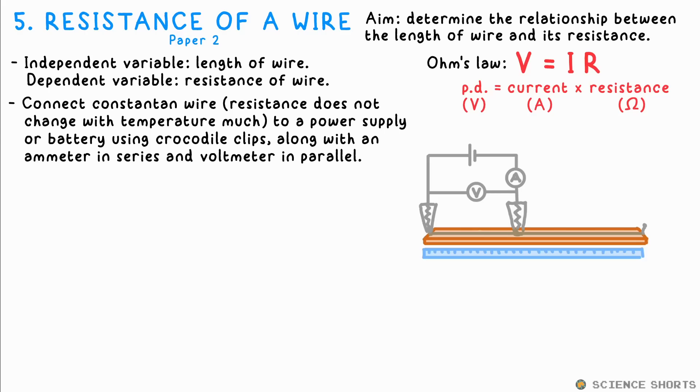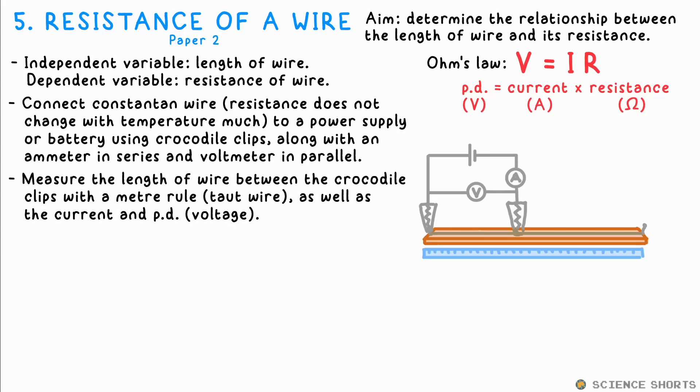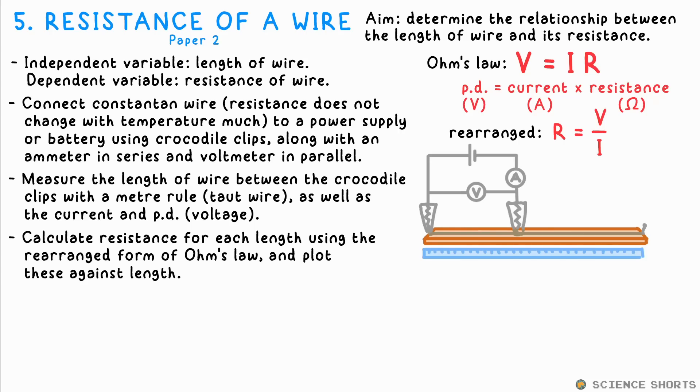Attach the wires using crocodile clips and cables to a battery, an ammeter in series to measure the current, and a voltmeter in parallel to measure the PD. Change the distance between the two crocodile clips to change the effective length of the wire. Measure this with the meter rule, making sure the wire is taught when you do this.